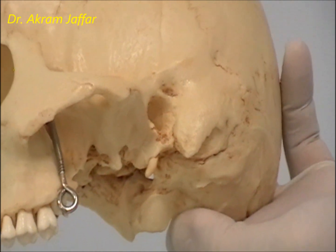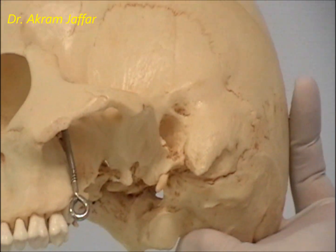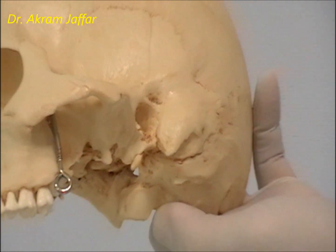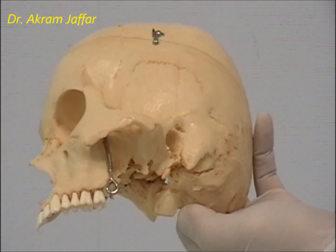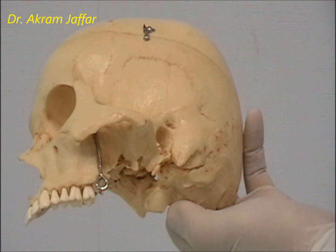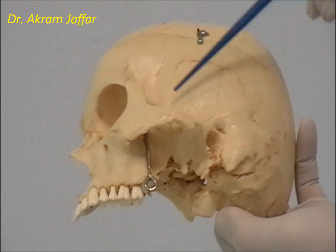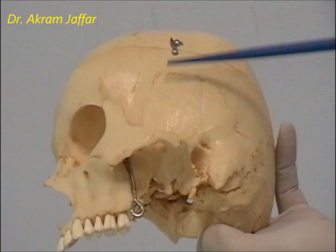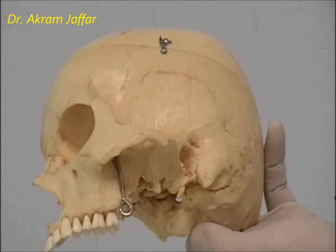The temporal bone is called the temporal bone from the word 'tempus,' meaning time, derived from the fact that this is the region where hair first begins to gray. That is why it is called the temporal bone, and the region superficial to it is called the temporal region.